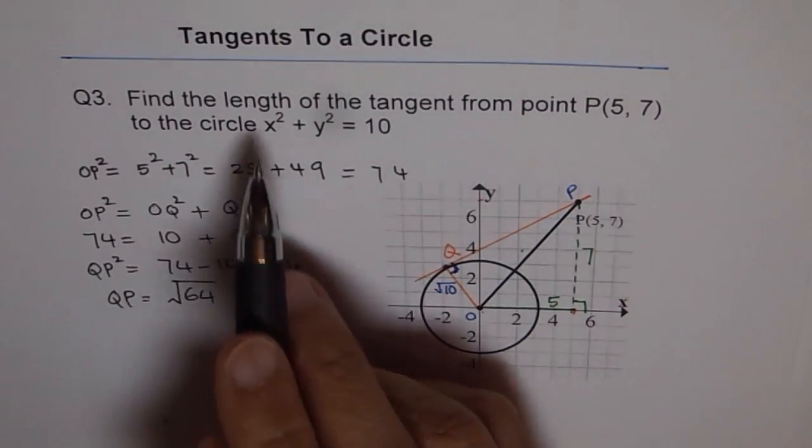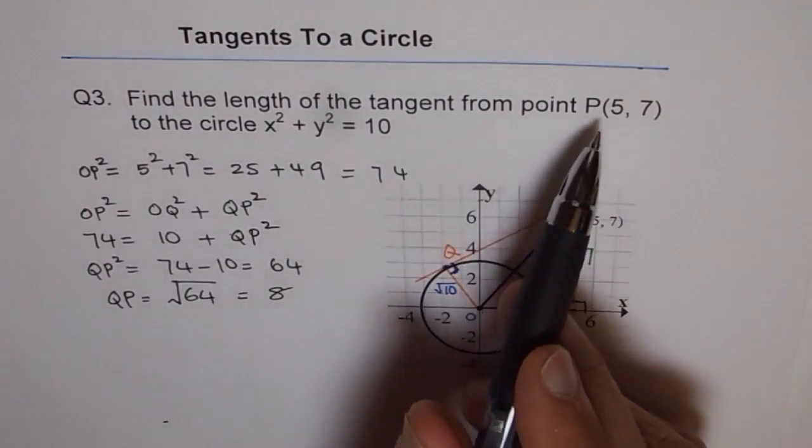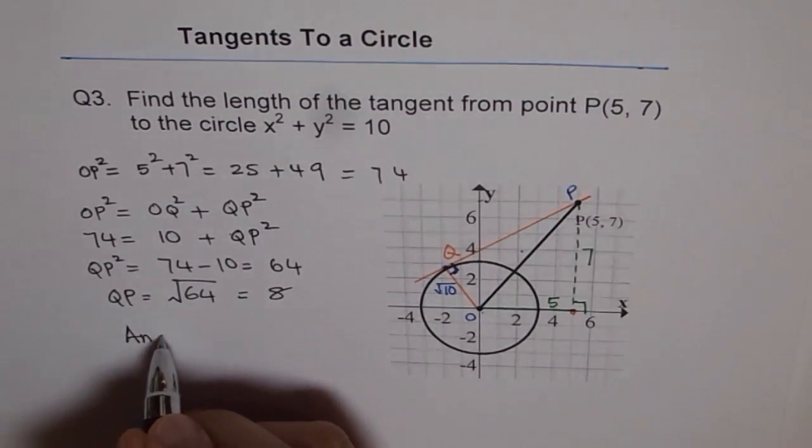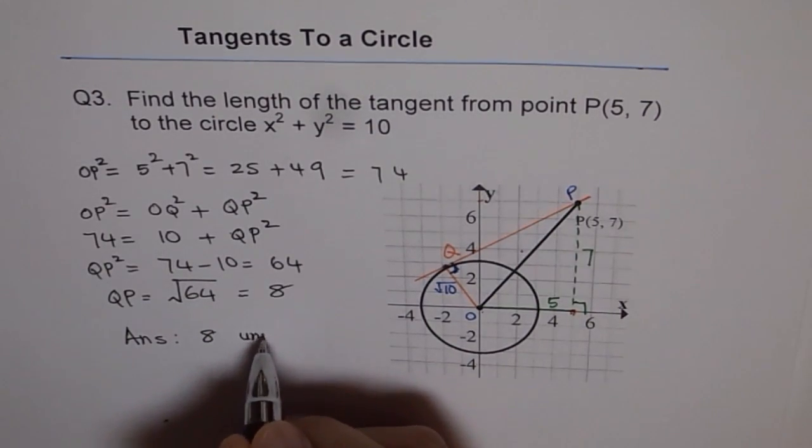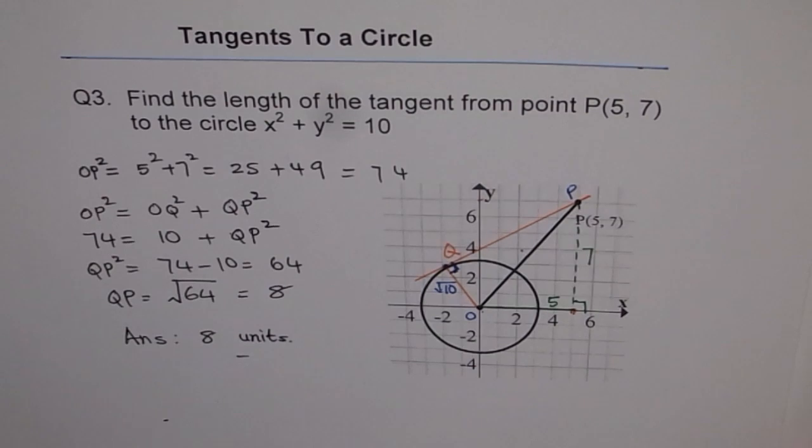And therefore, we find that the length of the tangent from the point P is 8, 8 units. So that is our answer.